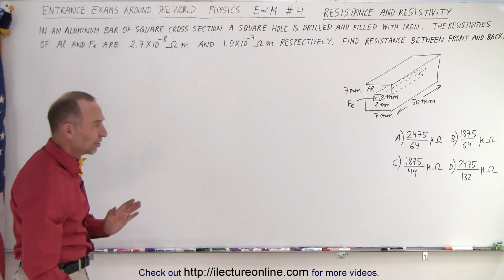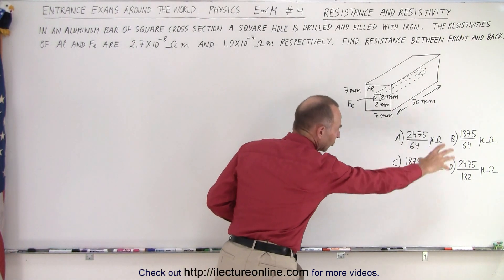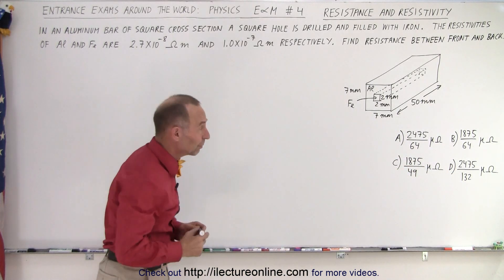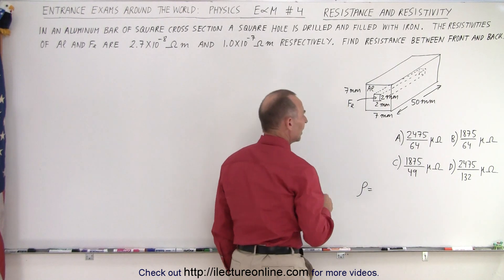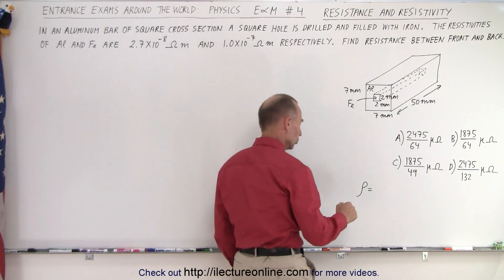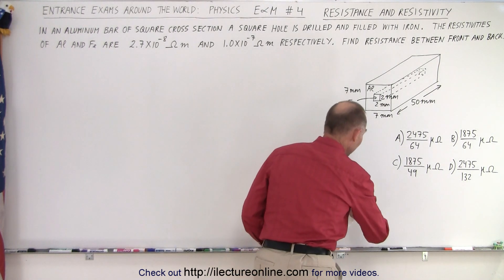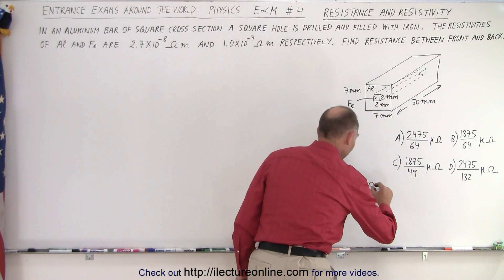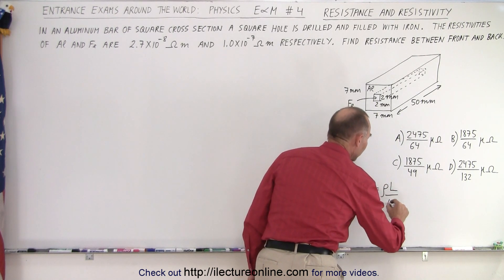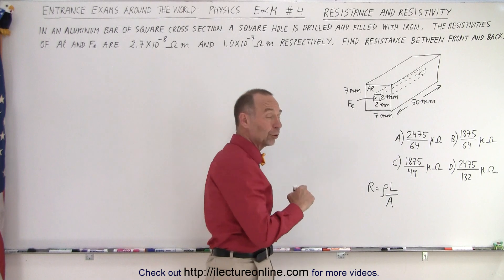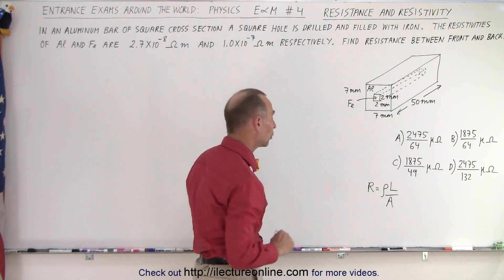So there's a couple things we need to think about. First of all, you need to know the equation for resistivity. The resistance is going to equal the resistivity times the length divided by the cross-sectional area. So we're going to have to figure out the resistance of the aluminum and the resistance of the iron using that equation.